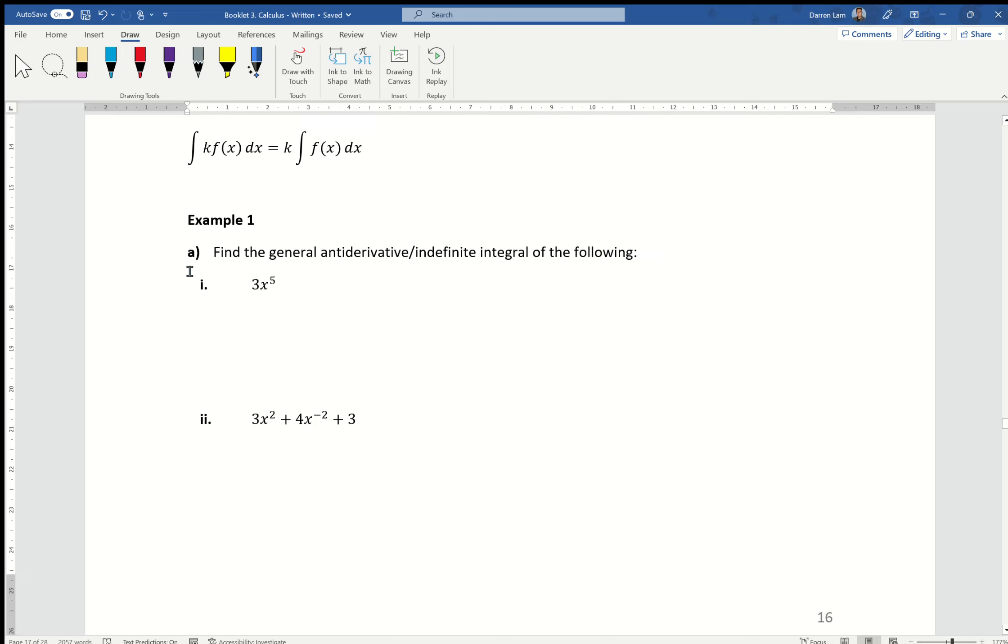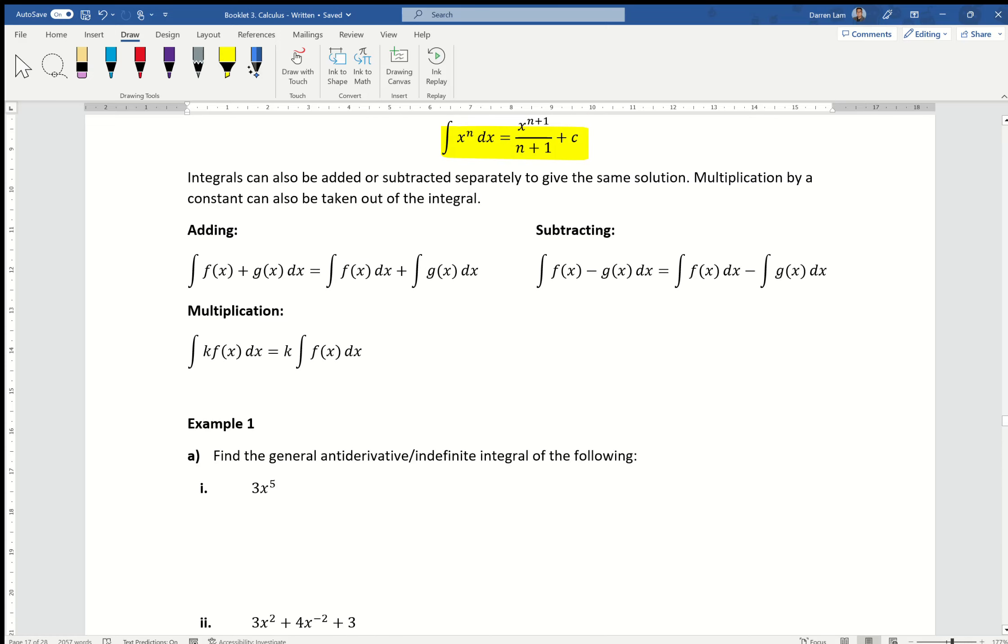So example 1, find the general antiderivative. This one's pretty straightforward. All we're looking at is applying the same rule as above. So again, it's going to be x to the power of, increasing that up by 1. So it's going to be 6 over 6. So we're dividing by our new power, which of course gives us an answer of x to the power of 6 over 2. Pretty easy.